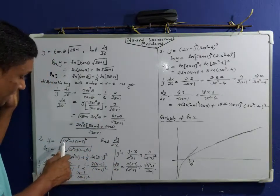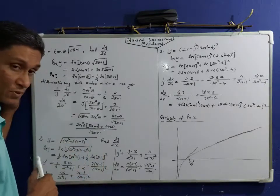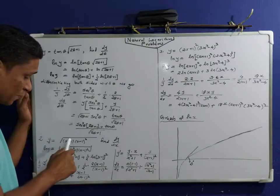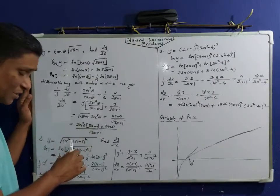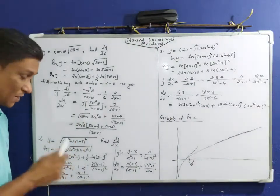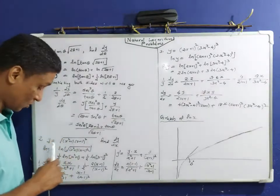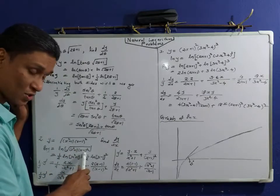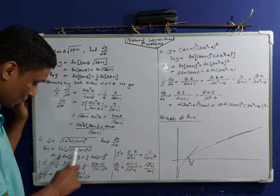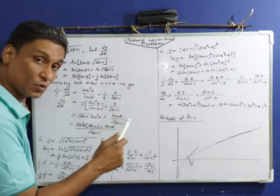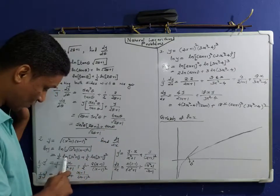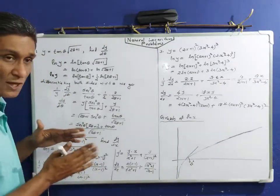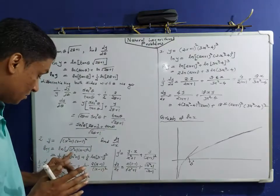Second problem: y = √(x²+1) · (x−1)², find dy/dx. We need to find dy/dx. Direct differentiation using the product rule would be confusing, so we use logarithmic differentiation. Taking ln: ln y = ln[√(x²+1) · (x−1)²]. Applying the power rule and product rule: ln y = (1/2)ln(x²+1) + (1/2)ln(x−1)².